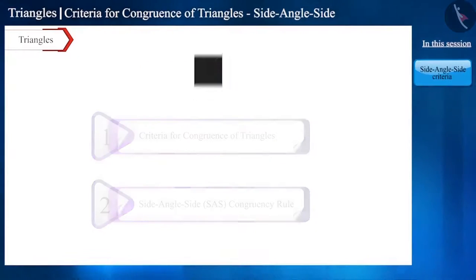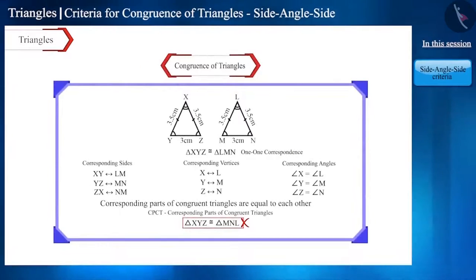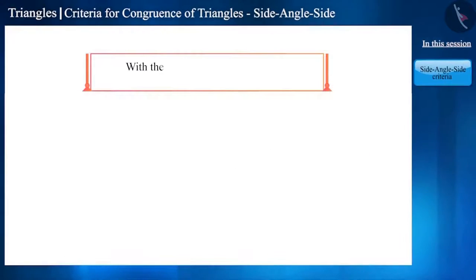When two triangles are congruent, then there is one-to-one correspondence between their sides, angles and vertices. But with the help of some sides and angles, can we prove two triangles to be congruent?